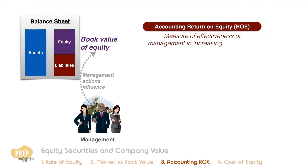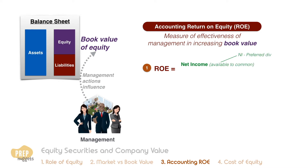A key measure to evaluate the effectiveness of management in increasing the company's book value is the accounting return on equity, simply referred to as ROE. ROE is calculated as net income available to common — which is the net income minus preferred dividends — divided by the average book value of common equity over the period.